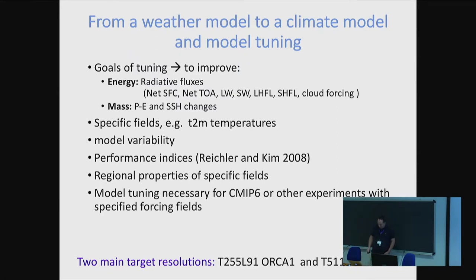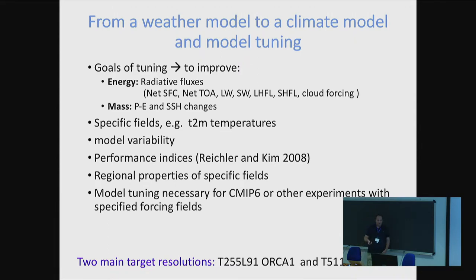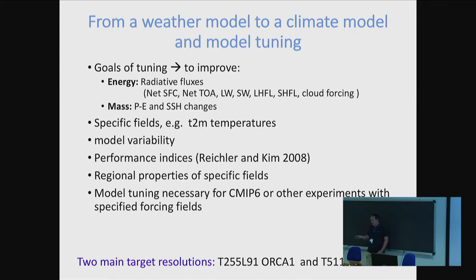A more refined approach is to look at regional features and regional dynamics. This whole exercise is also necessary for coordinated experiments which EC-Earth is involved in - to have a model which is well suited for the experiment. For each experiment, say CMIP6, or a coordinate experiment called Hi-Res MIP which is part of CMIP where you compare the high-resolution version of the model, every time the protocol changes a bit, the forcing fields change a bit, and so you need to check again if your model is well-tuned.